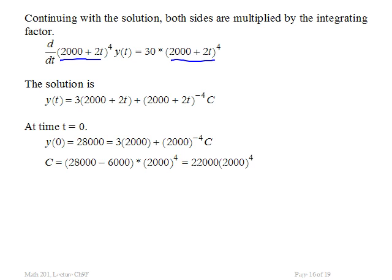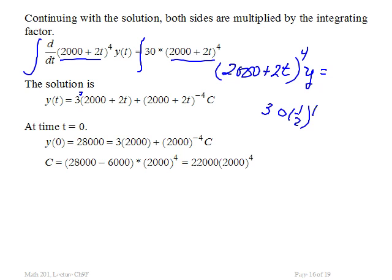On this side, I get 2,000 plus 2t raised to the 4th times y. Now I'm integrating this. I will get 30. The 30 comes out in front. I've got this raised to the 4th power. Obviously it's 1 half, you can do this by inspection. And I've got 2,000 plus 2t to the 5th divided by 5. It should be a 3, because 2 times 5 is 10, 30 divided by 10 gives me a 3.